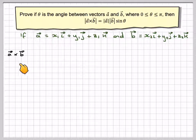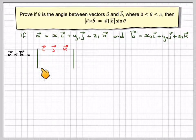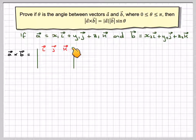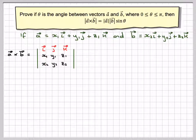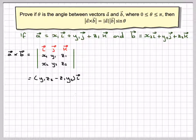Then if we find the cross product by forming the determinant matrix with i, j, k in the first row, then x1, y1, z1, then x2, y2, z2 — remember you cover the first column up and find the determinant of what's left. So you get (y1·z2 minus z1·y2)i.